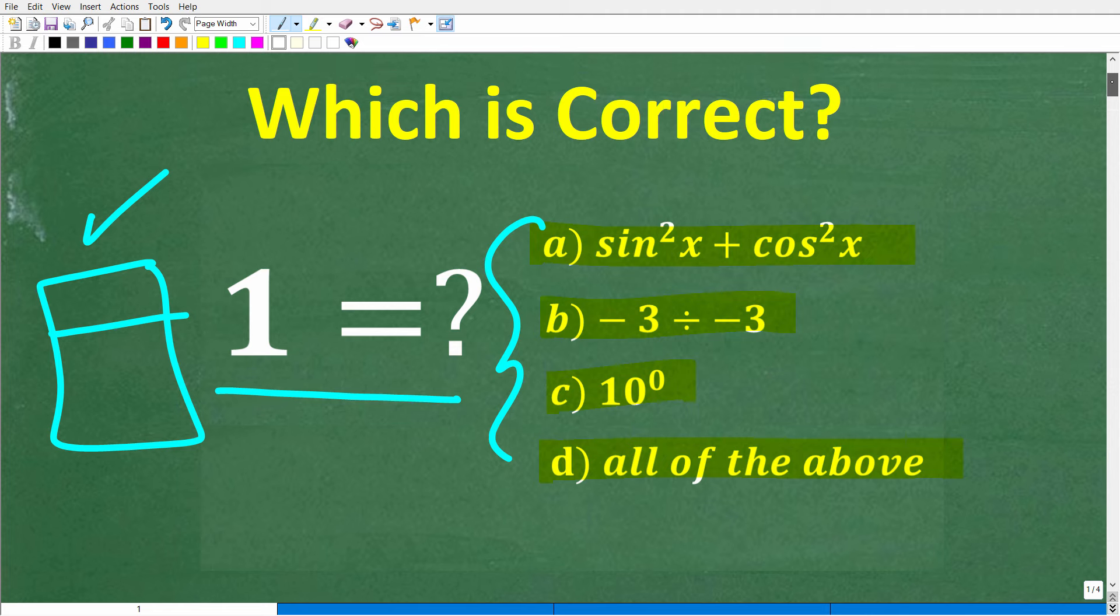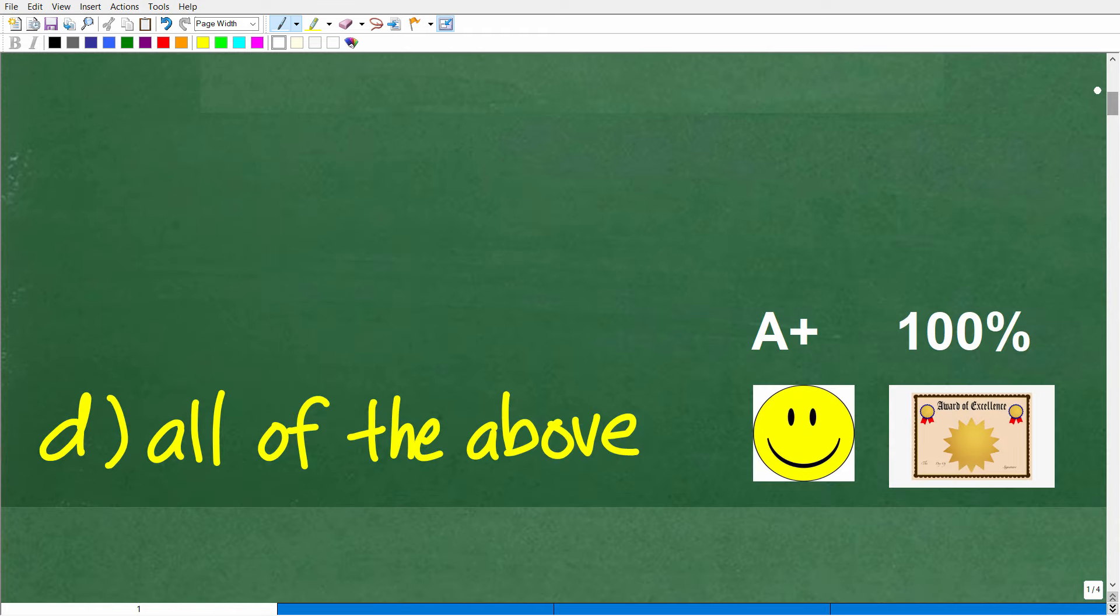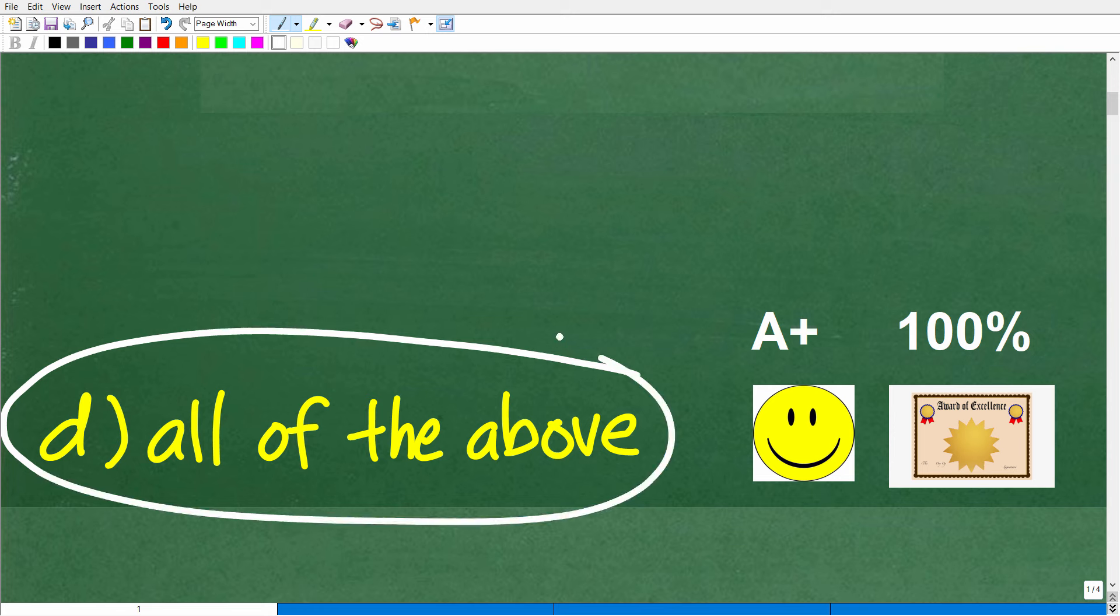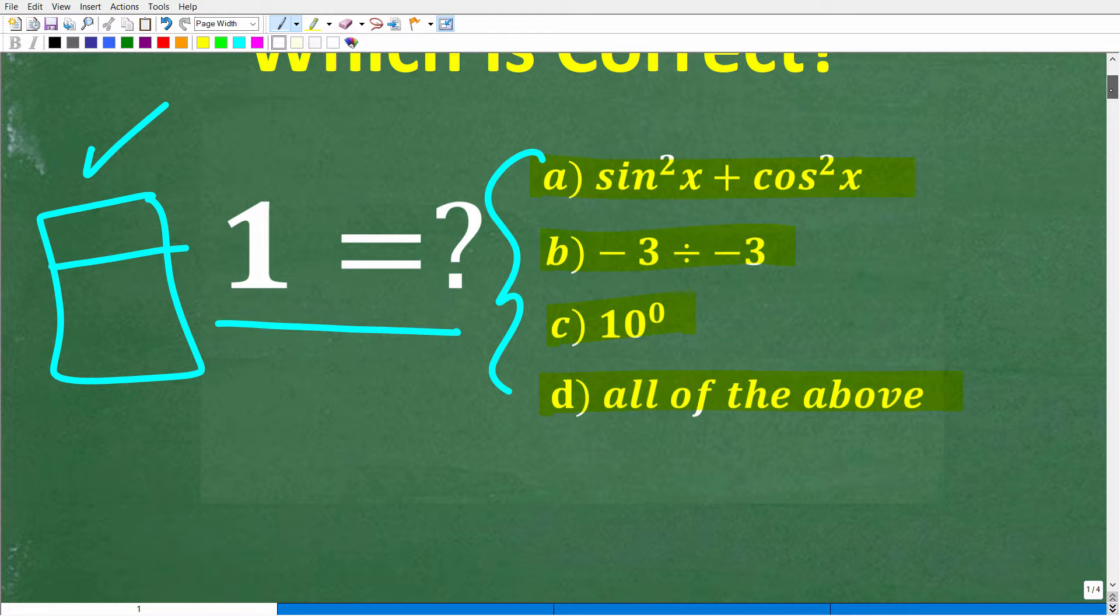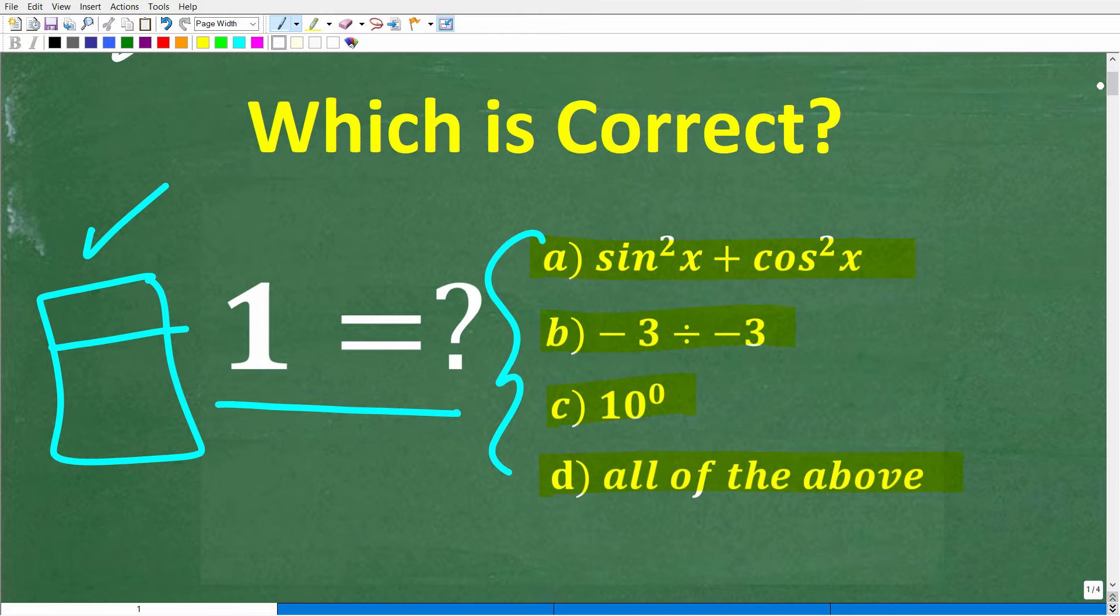Alright, so again, feel free to use your calculator. And hopefully, you know how to use your calculator, because if you can, again, no one should get this problem wrong. Alright, so what is the right answer? Well, the correct answer here is D, all of the above. Alright, now, if you got this right, you definitely get a happy face, an A+, a 100%, and a certificate of excellence for being an outstanding multiple choice question test taker.